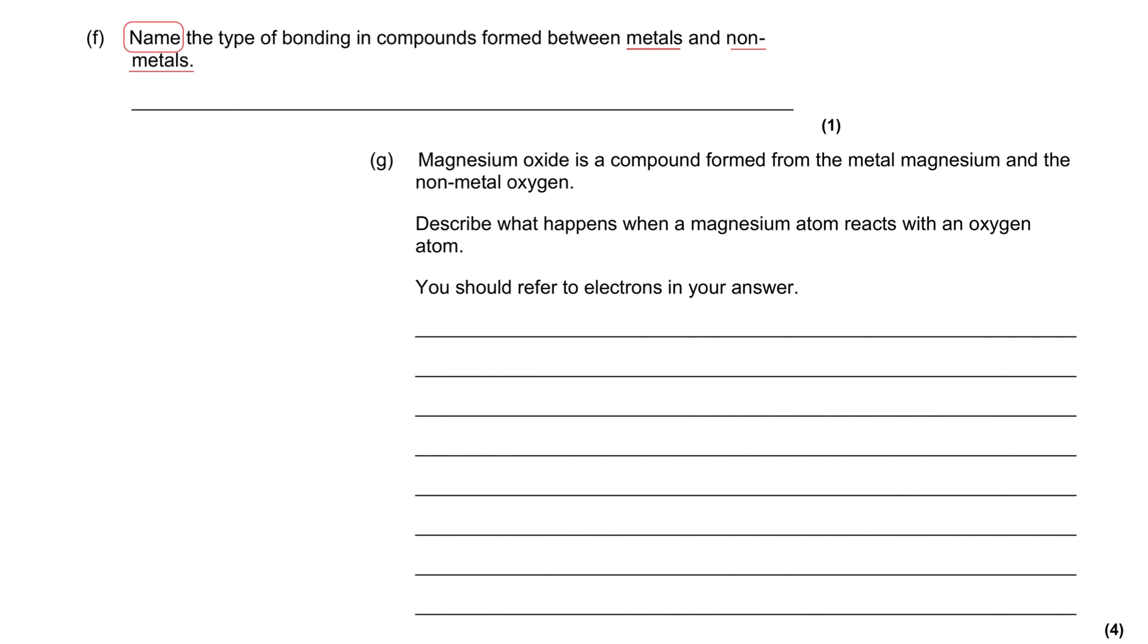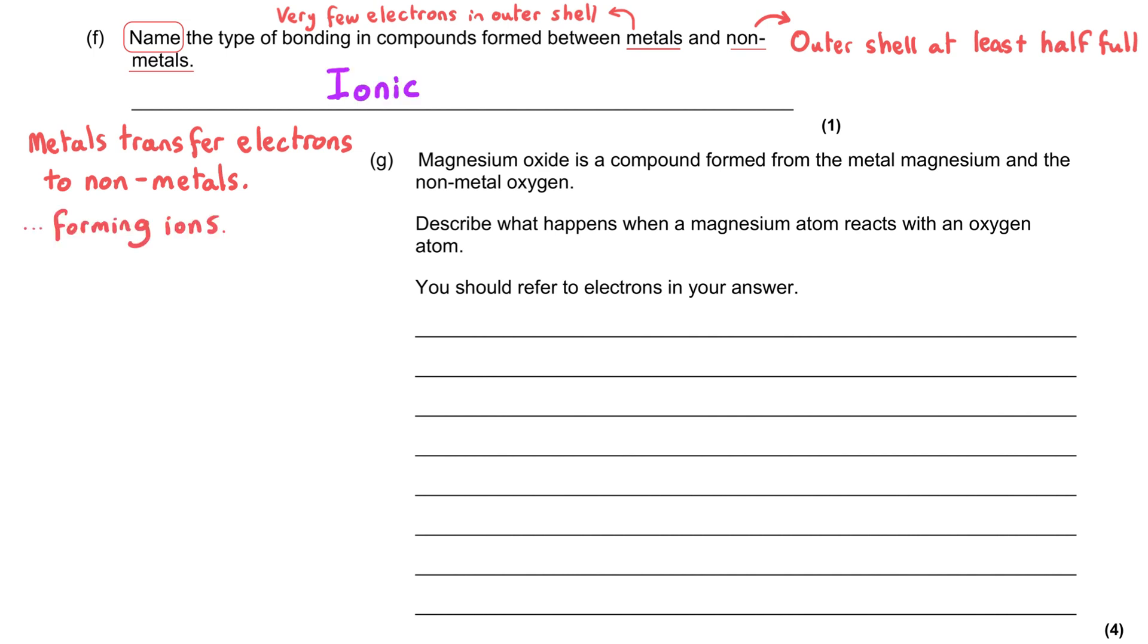First of all, metals typically only have a few electrons in their outer shell, and non-metals generally have an almost complete outer shell. And so the way they bond together is they transfer electrons from the metal to the non-metal, and this forms ions, and so the type of bonding is ionic bonding.